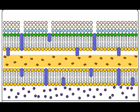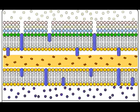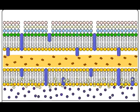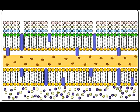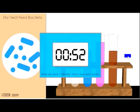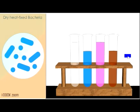In gram-negative bacteria, the iodine molecules move through the outer membrane, through the thinner peptidoglycan layer, and through the phospholipid bilayer, where they also form the larger crystal violet-iodine complex. After about a minute, the cells are still a bluish-purplish color. We give them a quick rinse of water and move on to the next step, where things really start to get interesting.